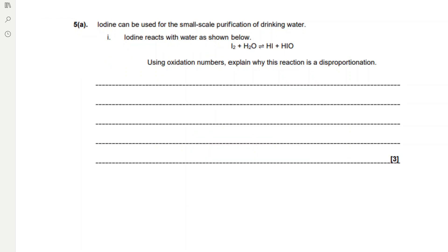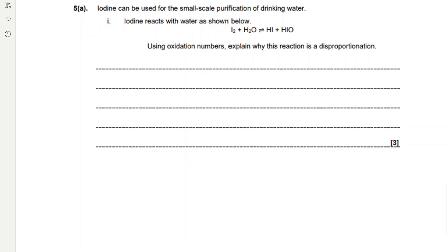Iodine can be used for small-scale purification of drinking water. Iodine reacts with water to form hydrogen iodide and HIO. Using oxidation numbers, explain why this reaction is a disproportionation.